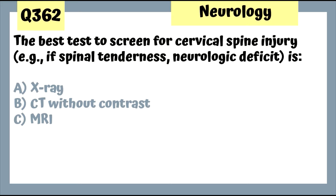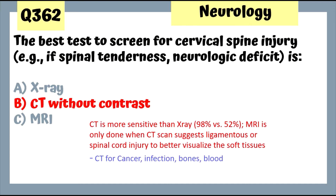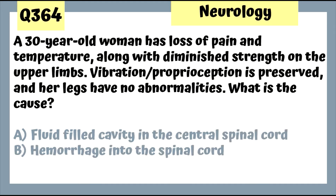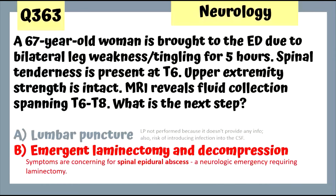Question 362: Best test to screen for cervical spinal injury with spinal tenderness or neurological deficit is CT without contrast. MRI is only done when CT scan suggests ligamentous or spinal cord injury to better visualize soft tissue. Question 363: A 67-year-old woman with bilateral leg weakness and tingling for five hours, spinal tenderness at T6, intact upper extremity strength, with MRI revealing fluid collection from T6 to T8 — next step is emergent laminectomy and decompression. This is a spinal epidural abscess — a neurological emergency.